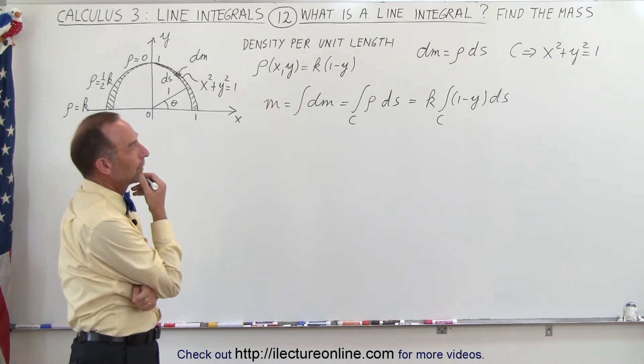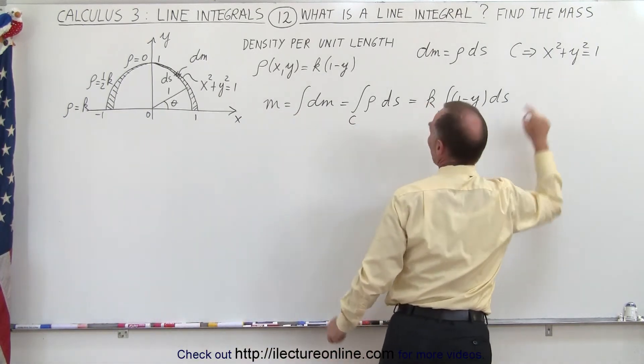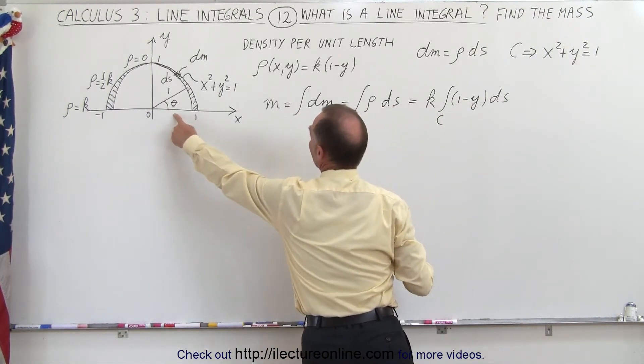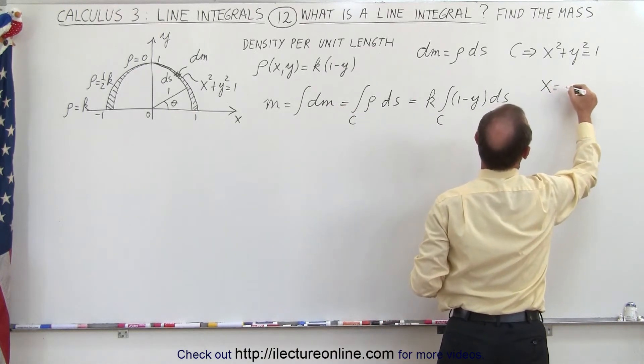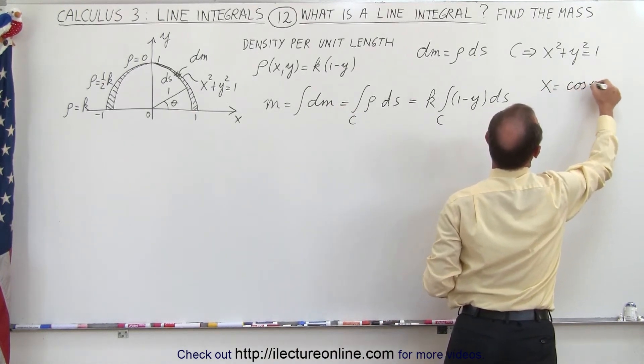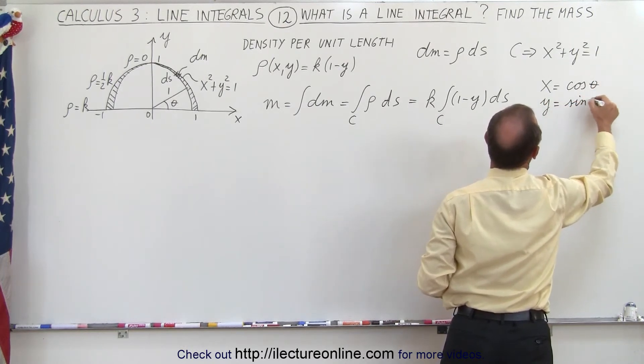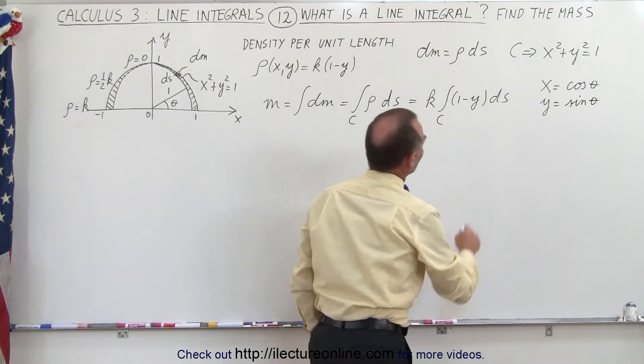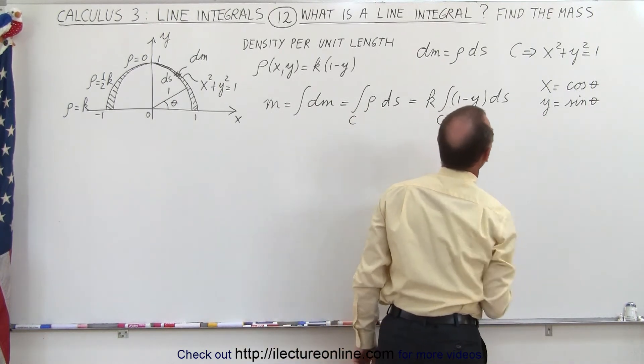So how can we do that? Well, first of all, what we can do is we can replace x and y for what they are in terms of the parametric variable theta. So we can say that x can be defined as the cosine of theta and y can be defined as the sine of theta. So we can go ahead and replace the y here by what y equals, which is the sine of theta.